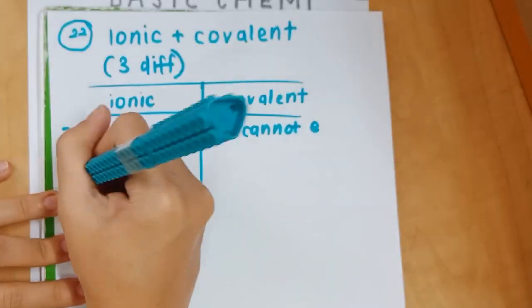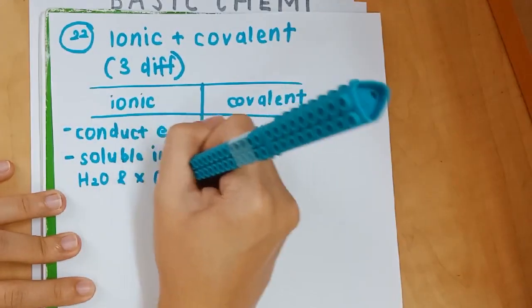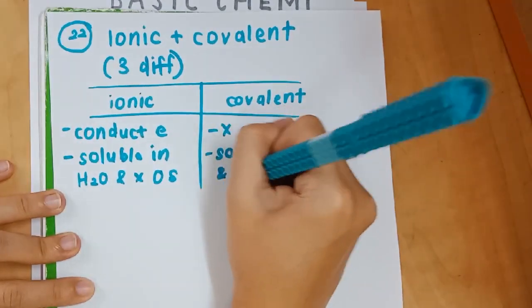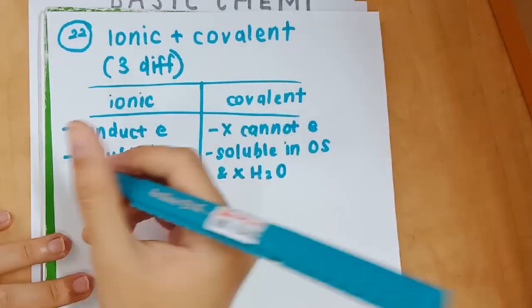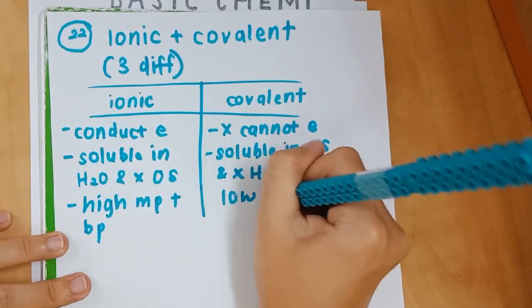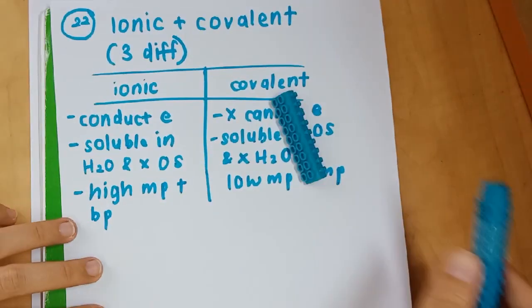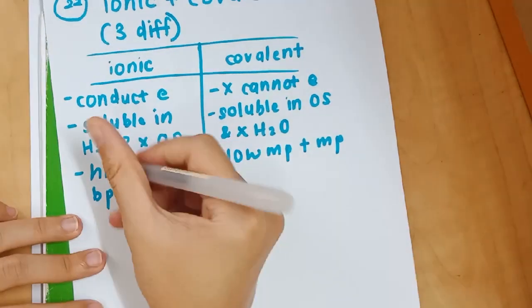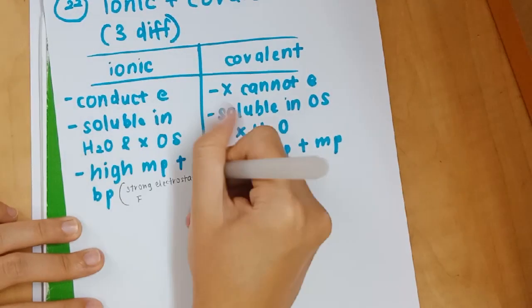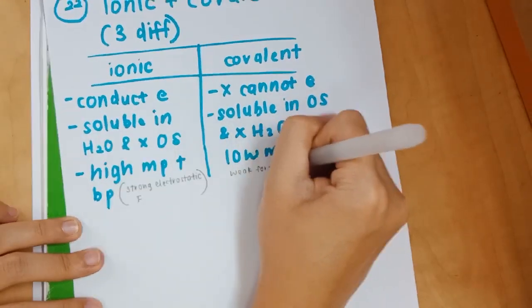For covalent compounds, it's just the complete opposite - they can dissolve in organic solvents and not water. Ionic compounds usually have high melting and boiling points. If you want to elaborate, it's because of the strong electrostatic forces between them. Covalent compounds have lower melting and boiling points, and it is due to their weak forces of attraction.